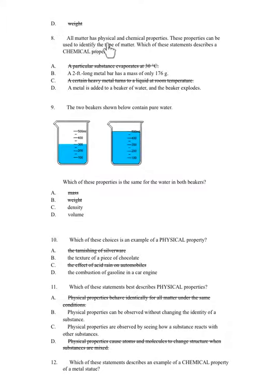Number 8. All matter has physical and chemical properties. These properties can be used to identify the type of matter. Which of these statements describes a chemical property? A. A particular substance evaporates at 30 degrees Celsius. B. A 2 foot long metal bar has a mass of only 176 grams. C. A certain heavy metal turns to a liquid at room temperature. D. A metal is added to a beaker of water and the beaker explodes.